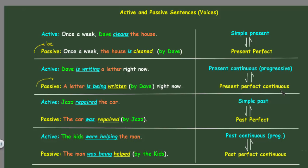The present continuous or progressive brings us to the present perfect continuous and vice versa. You can see that 'cleans' becomes 'is cleaned,' and 'is writing' becomes 'is being written.' The only difference in the continuous form is the addition of 'being.'